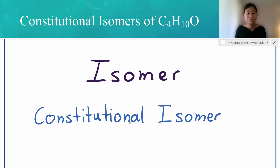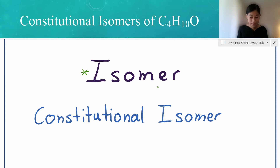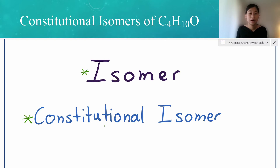And if you haven't already, make sure that you subscribe, like this video, and leave a comment down below. Here are two terms relevant to this video. First we have an isomer — isomers are compounds with the same formula but a different structure. There are different types of isomers, and one is called a constitutional isomer. Constitutional isomers are compounds with the same molecular formula but a different connectivity.